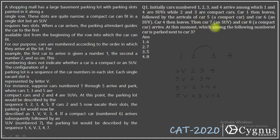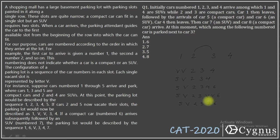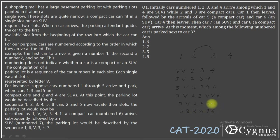Then car 7 and car 8 arrive. Car 7 is an SUV, so car 7 will occupy the two vacant places. Car 8 is a compact car, so I can park car 8 in the remaining single vacant slot. My final distribution will be: 5, 8, 2, 3, 7, and 6.